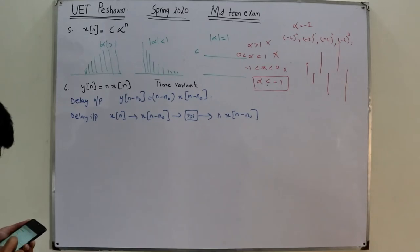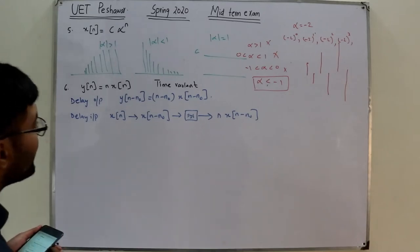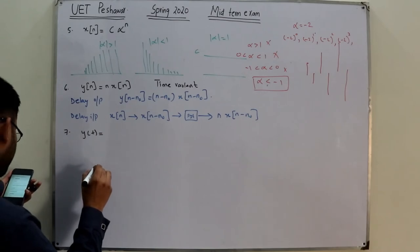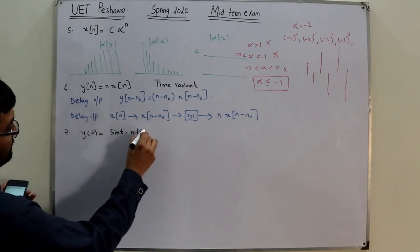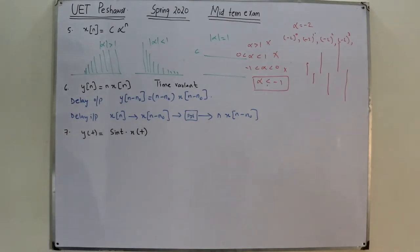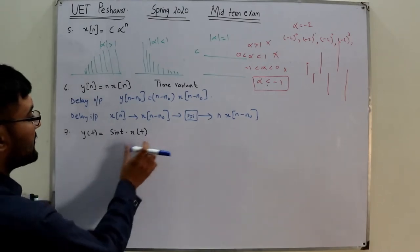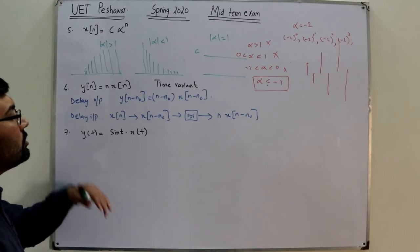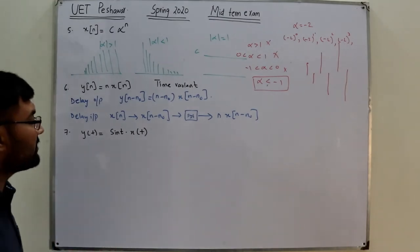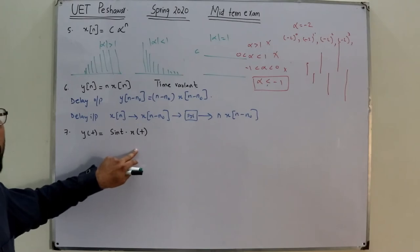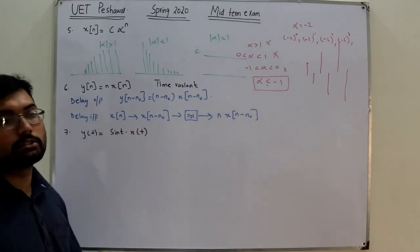Question 7: y(t) = sin(t)·x(t). We check for invertibility. One approach: for different values of t, sin(t) may be zero or undefined, so we cannot always recover x(t) from y(t).